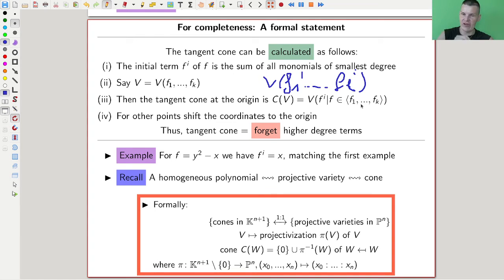In general it's a bit more difficult. You need to take the variety spanned by everything in the ideal and find correct generators. But anyway, the idea is the same. You take the generators of the ideal, take the monomials of lowest degree, or in other words you forget the higher degree terms, and that's your cone - the tangent cone.